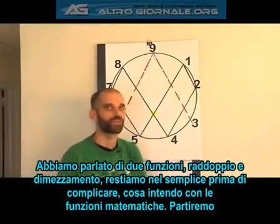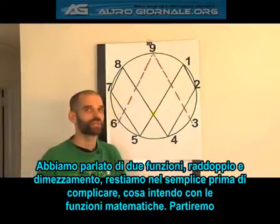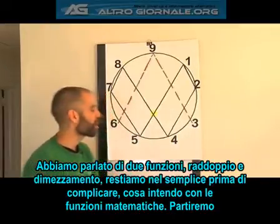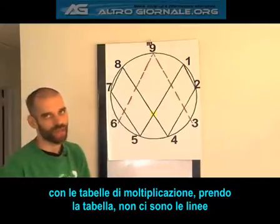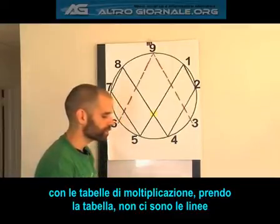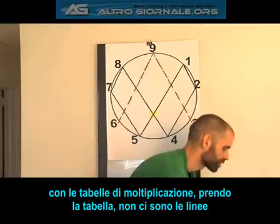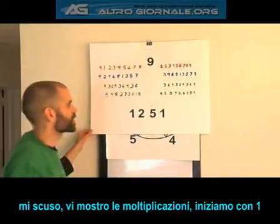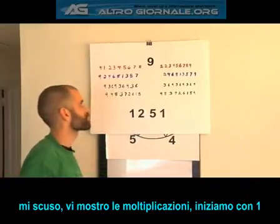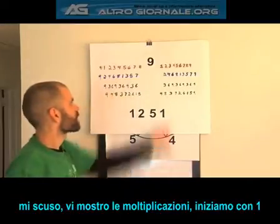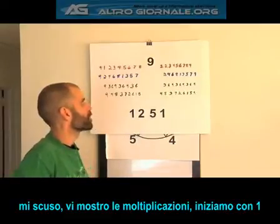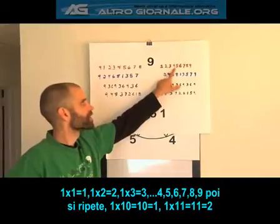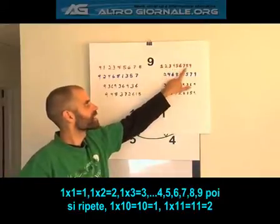So I've shown you two functions: doubling and halving. But let's go back a bit simpler and understand, before we go to complex physics, what these numbers are and what we mean by the functions of math. We'll start simply with multiplication tables. Now here I don't have my lines drawn in — I'm sorry for the primitive board, but you'll have to bear with me. I'm showing you multiplication tables. The number one, when you multiply it: one times two is two, one times three is three, one times four is four — five, six, seven, eight, nine.